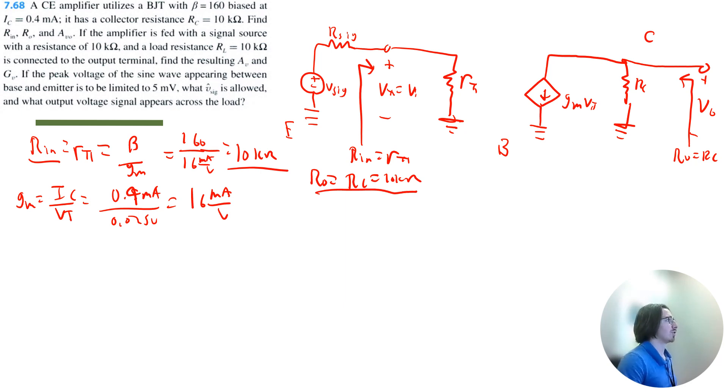And lastly, our open circuit voltage gain is simply just negative gm times Rc, which is negative 16 milliamp per volt times Rc, which is 10 kilo-ohms. If I calculate, that's negative 160 volt per volt. Let's continue.